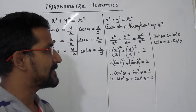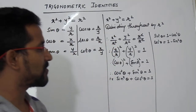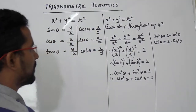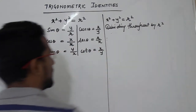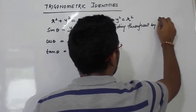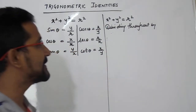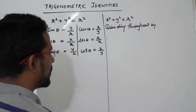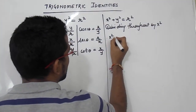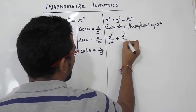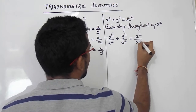Now we will derive the second identity. We start again with sin²θ + cos²θ = 1, or equivalently x² + y² = r². Earlier we divided by r²; now we will divide this equation throughout by x². What we get is: x²/x² + y²/x² = r²/x².